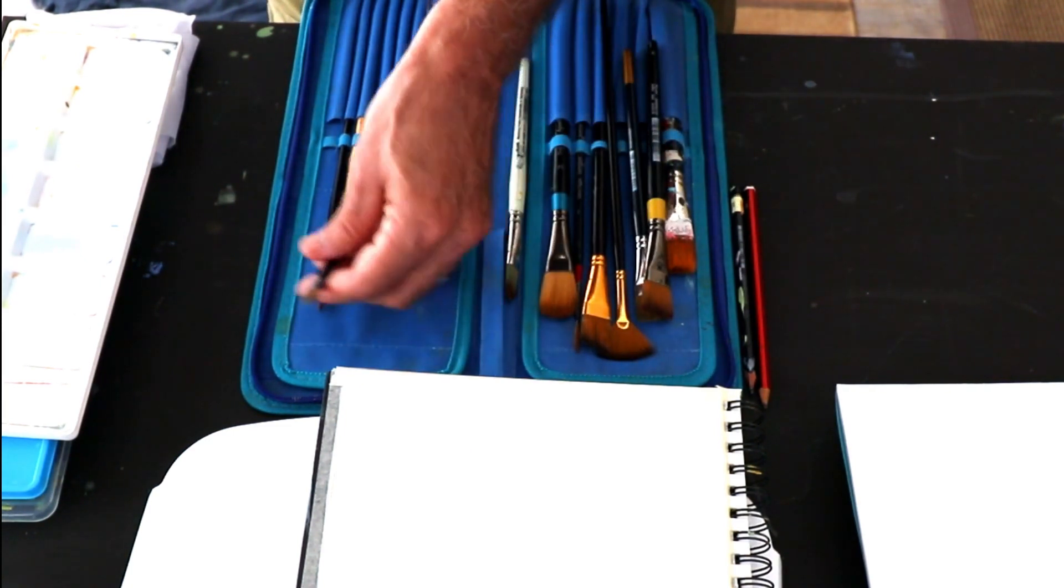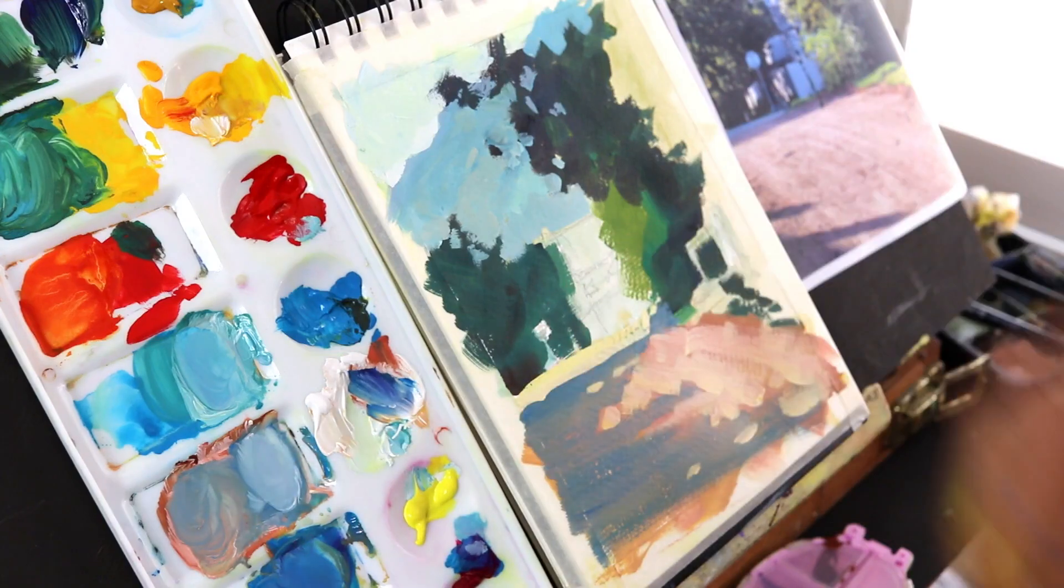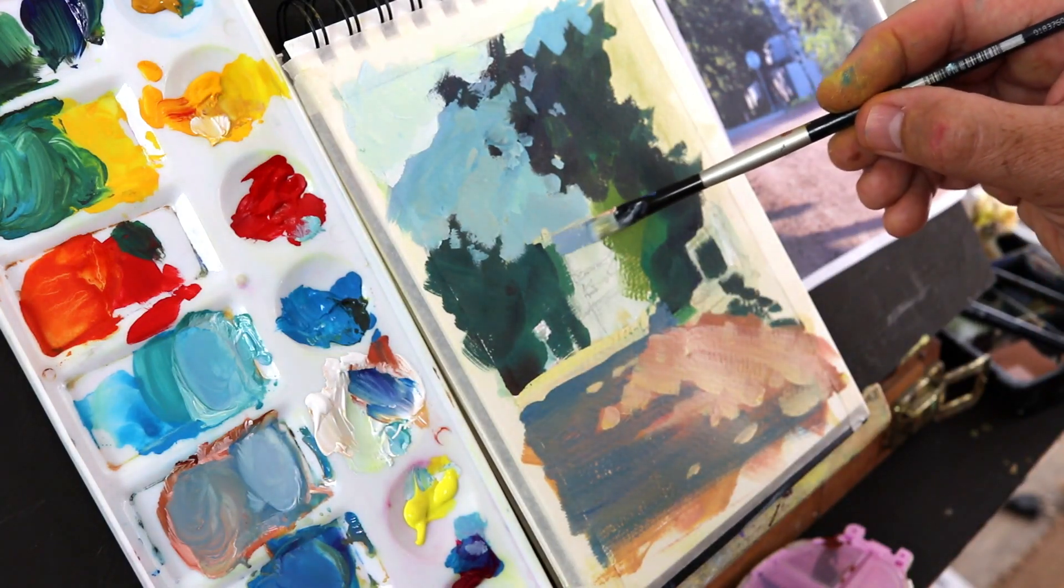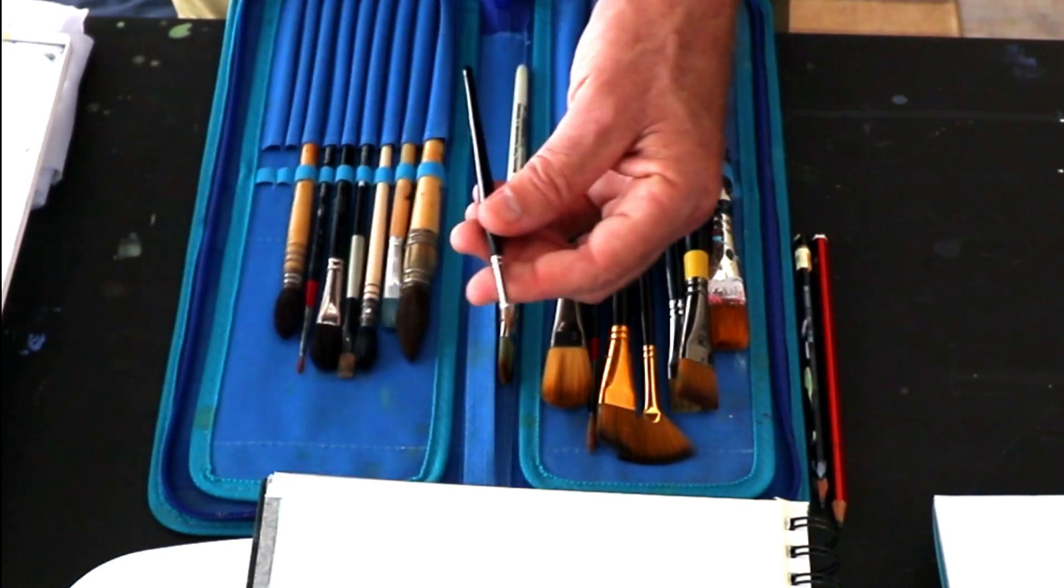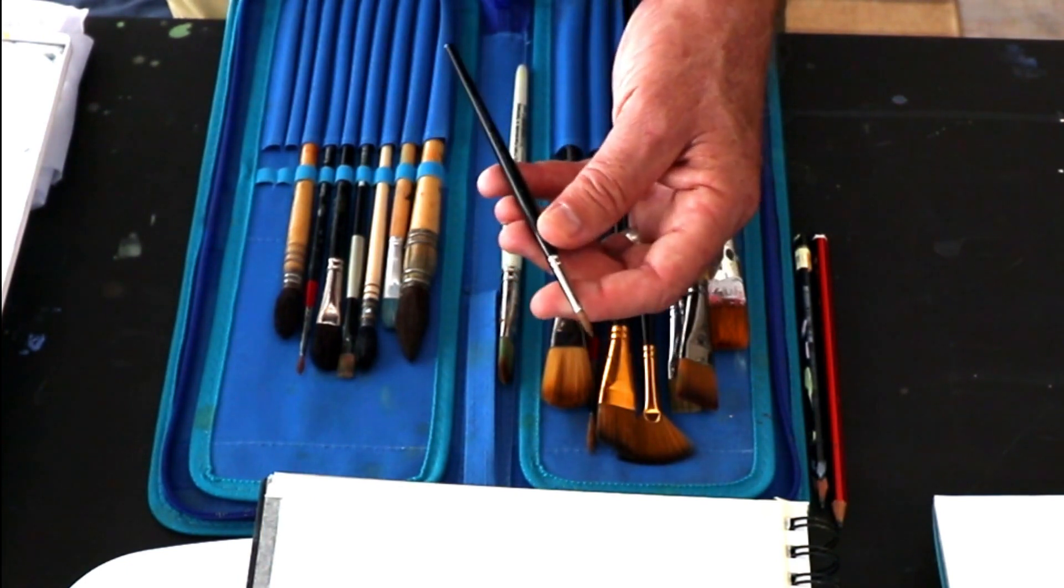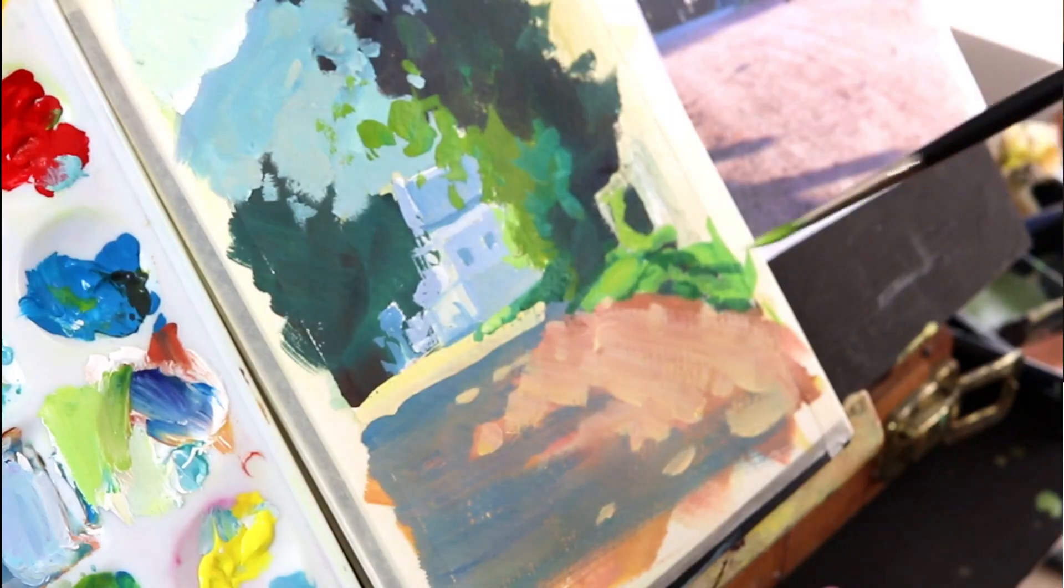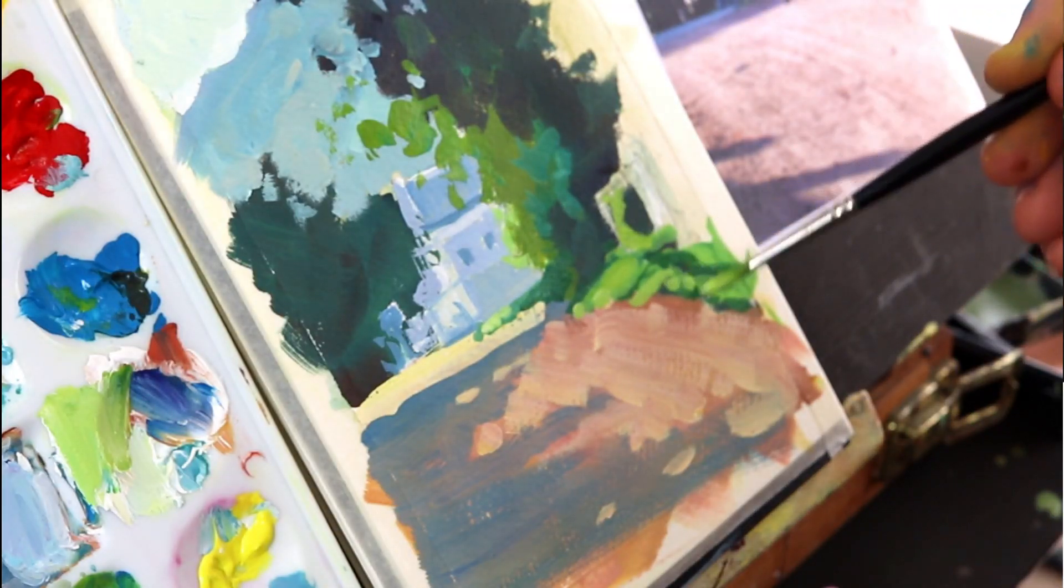Then a couple of smaller brushes. This is just a small synthetic short flat brush. That's quite handy. A very nice brush that I use a lot is this Winsor & Newton sable hair brush. Sable is lovely for gouache painting as well as watercolor, of course.